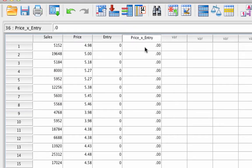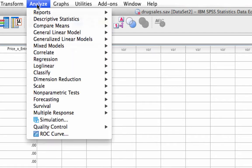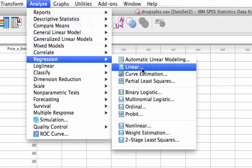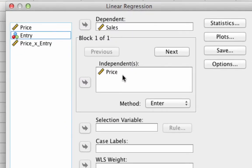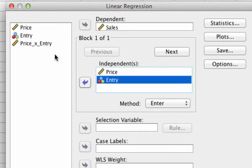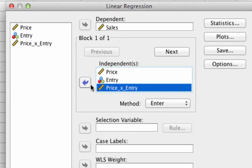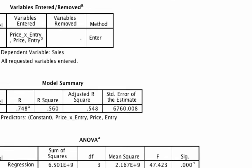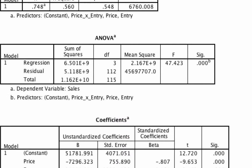So now we actually want to run the regression. So we go to analyze, regression, linear. And instead of just price, we want to include price, entry, and the interaction, price times entry. And just as a reminder, whenever we have an interaction term, we must include the underlying variables as well. So if we run this, we see the following output.